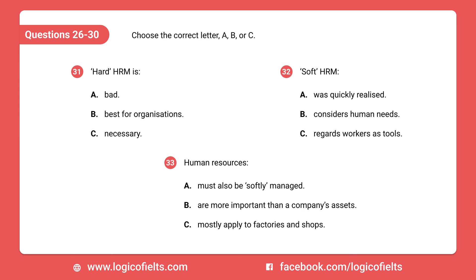You will hear a lecturer discussing human resource management. First, you have some time to look at questions 31 to 33. Now listen carefully and answer questions 31 to 33. Obviously, the people who work in companies need to be managed. Pay must be added up, hours clocked, and leave tallied. This is known as hard human resource management, or hard HRM. This is because it is based on hard numbers, facts and rules — that is, an impersonal, calculative aspect. There must be such an outlook with all its paper-based systems in order to carry out company tasks. But if there's a hard, there must be a soft, and it is this soft element of HRM that I'd like to consider now.